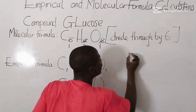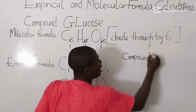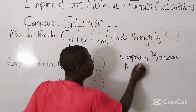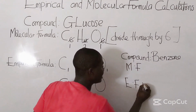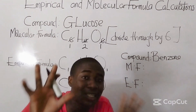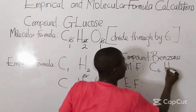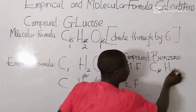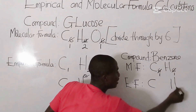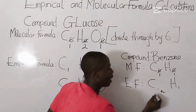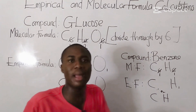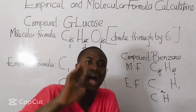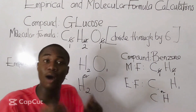Let's take another example: benzene, an organic compound. The molecular formula of benzene is C6H6 — the actual way benzene exists. To get the empirical formula, we divide through by 6, giving 1 and 1. So the empirical formula is C1H1, or simply CH. To summarize: the molecular formula is the actual way a compound exists, while the empirical formula is the smallest form that compound can exist.